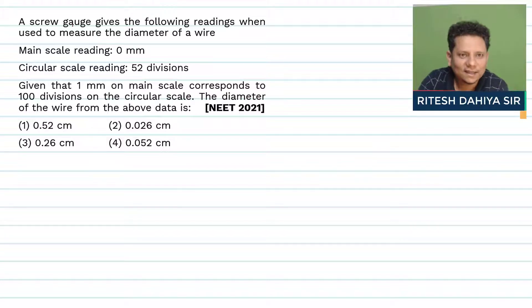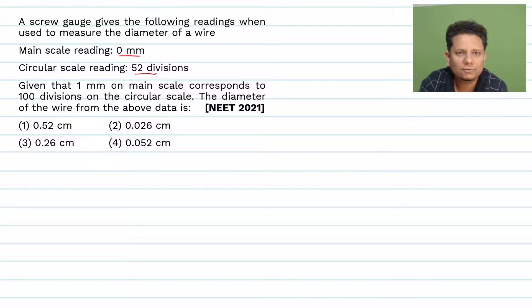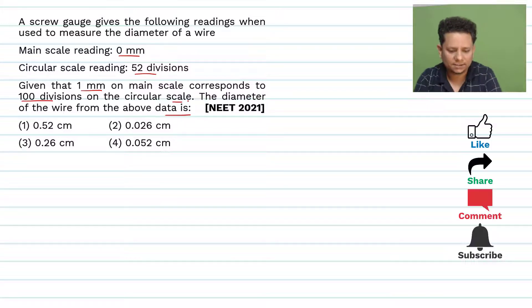A question says a screw gauge gives the following readings when used to measure the diameter of a wire. Main scale reading: 0 mm, and circular scale reading: 52 divisions. Given that 1 mm on the main scale corresponds to 100 divisions on the circular scale. The question is: diameter of the wire from the above data is?